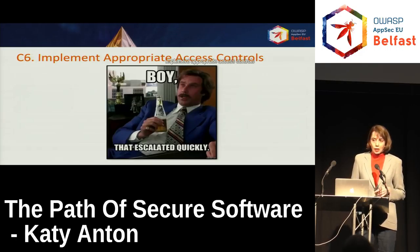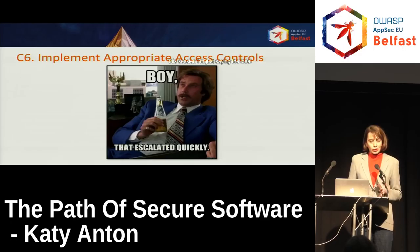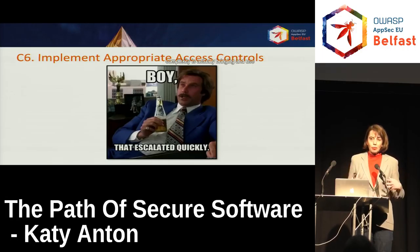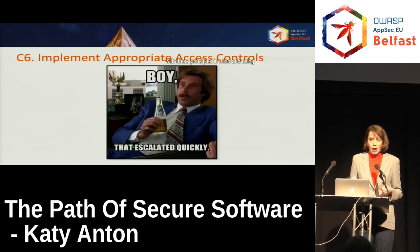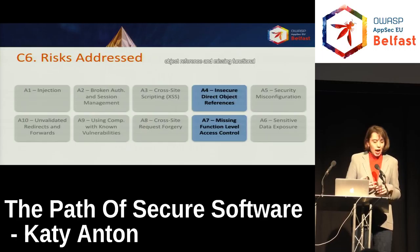We have control number six: implement appropriate access controls. When it comes to access controls, these can be complex security controls. The ideal way to deal with this complexity is to bring in and use a framework already designed with these principles in mind. Using a framework correctly can help you prevent insecure direct object reference and missing functional-level access controls.